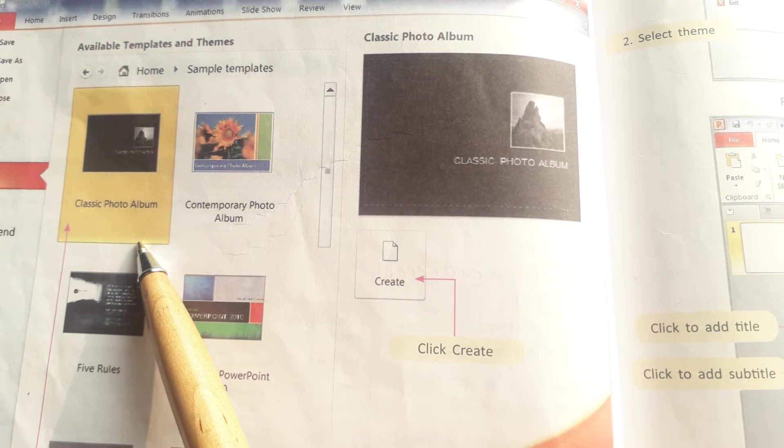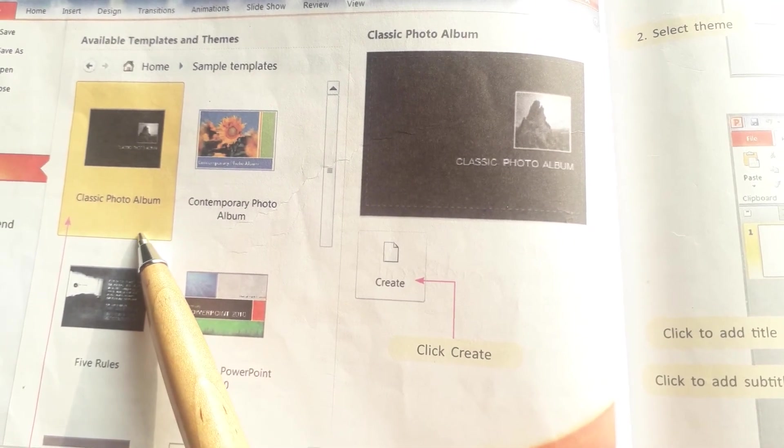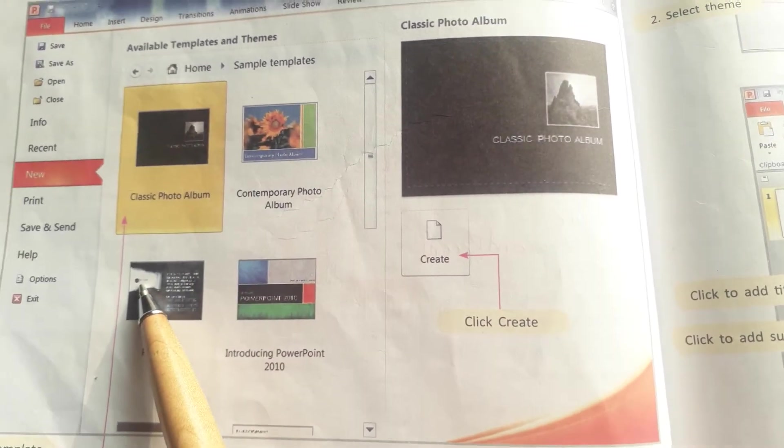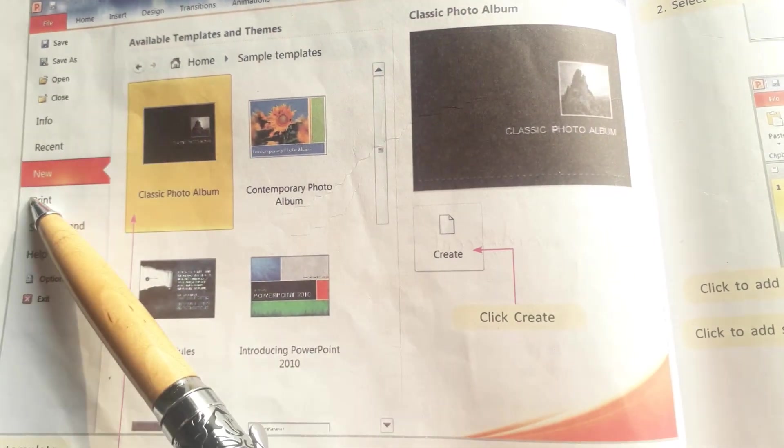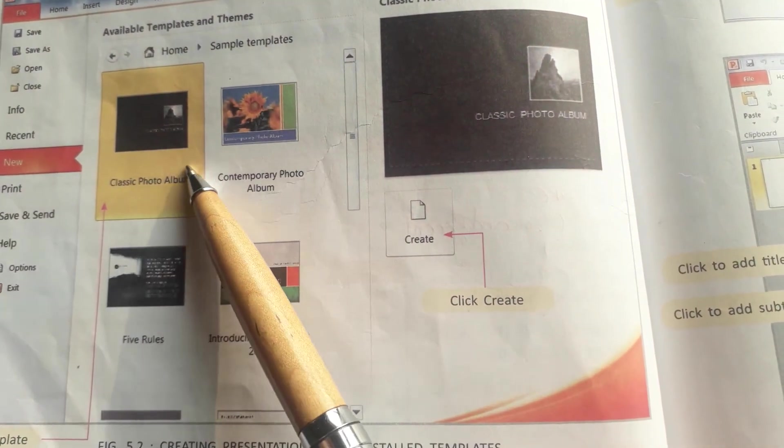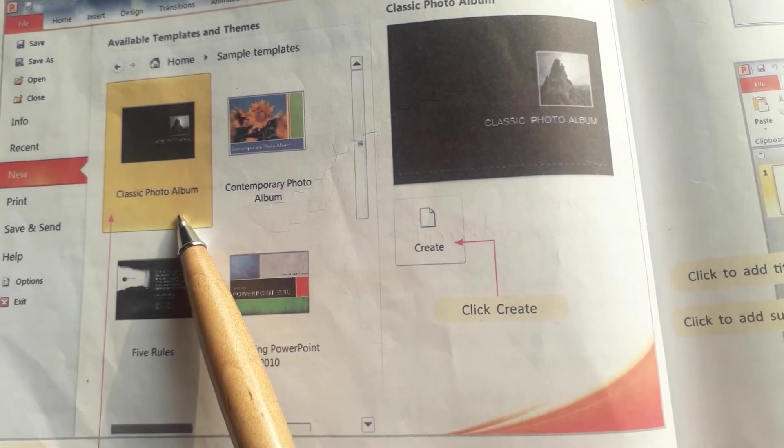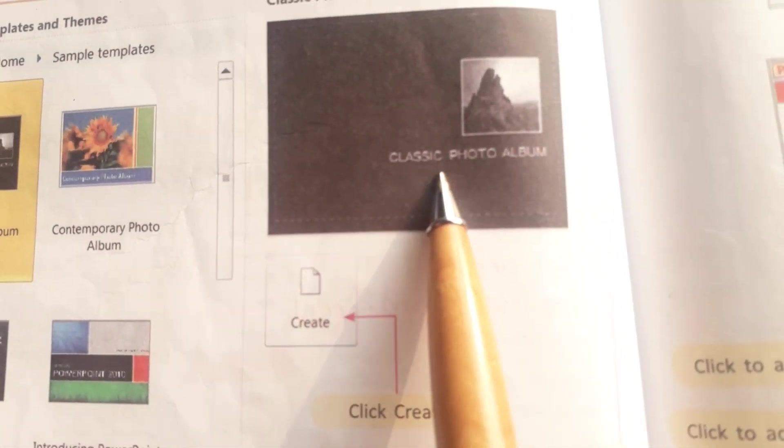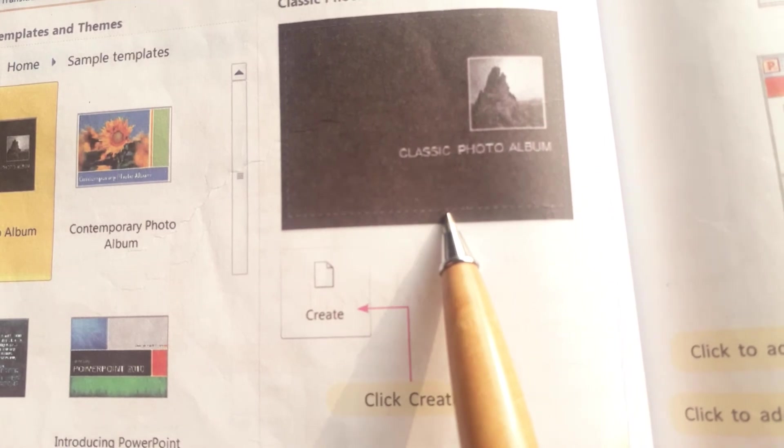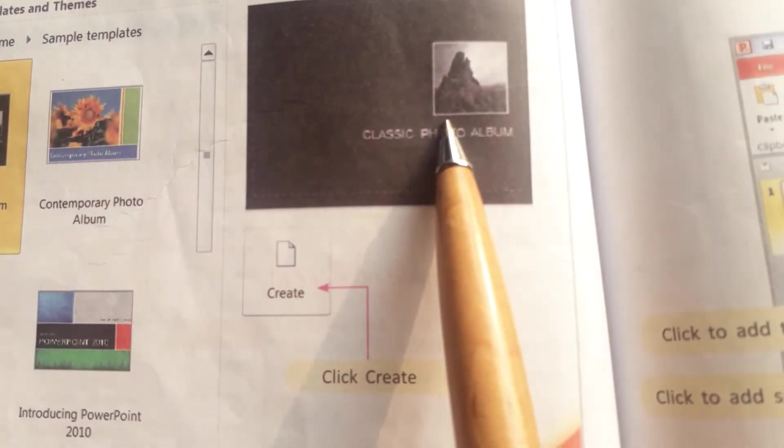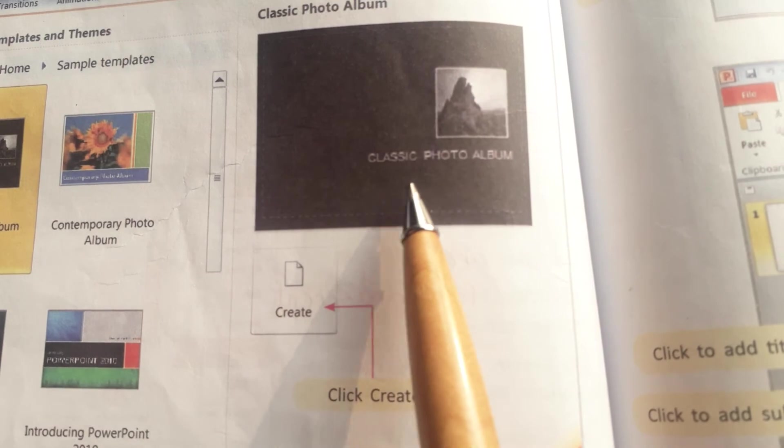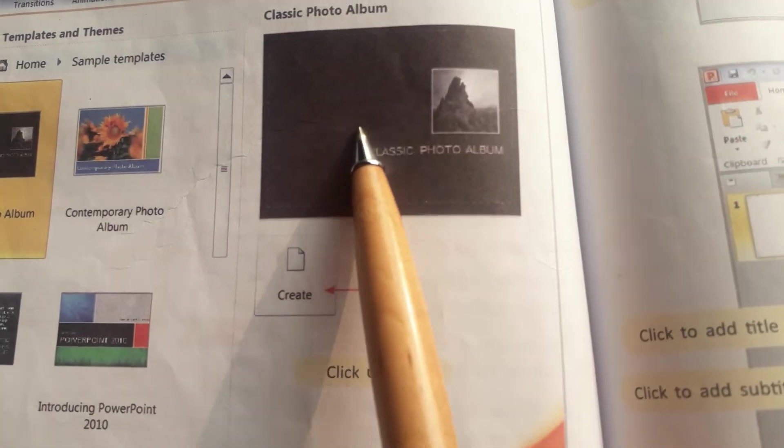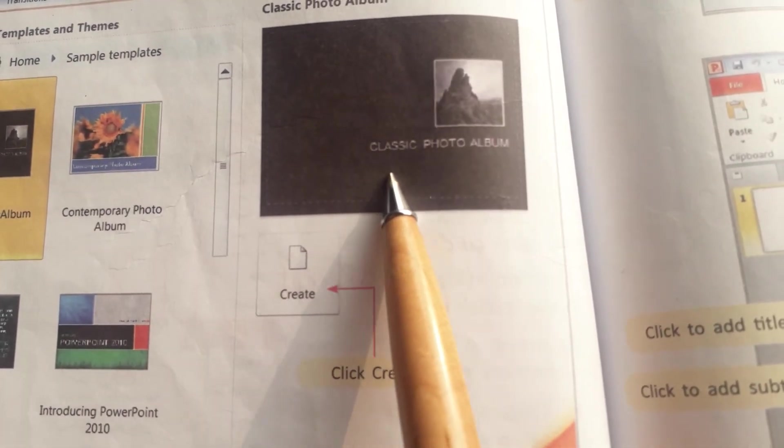Students, to learn theme which we have built in PowerPoint, same way we have different templates available. We can choose a template. First click on new, we will click template, we will see different templates. This one is classic photo album template. We will click on the template and select it for our presentation.